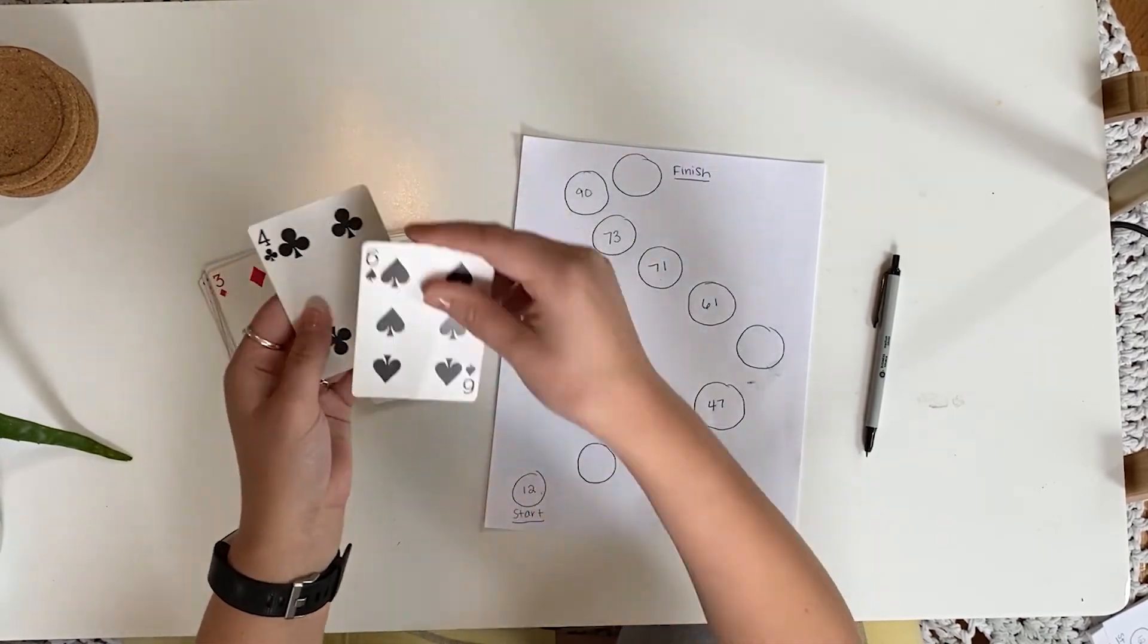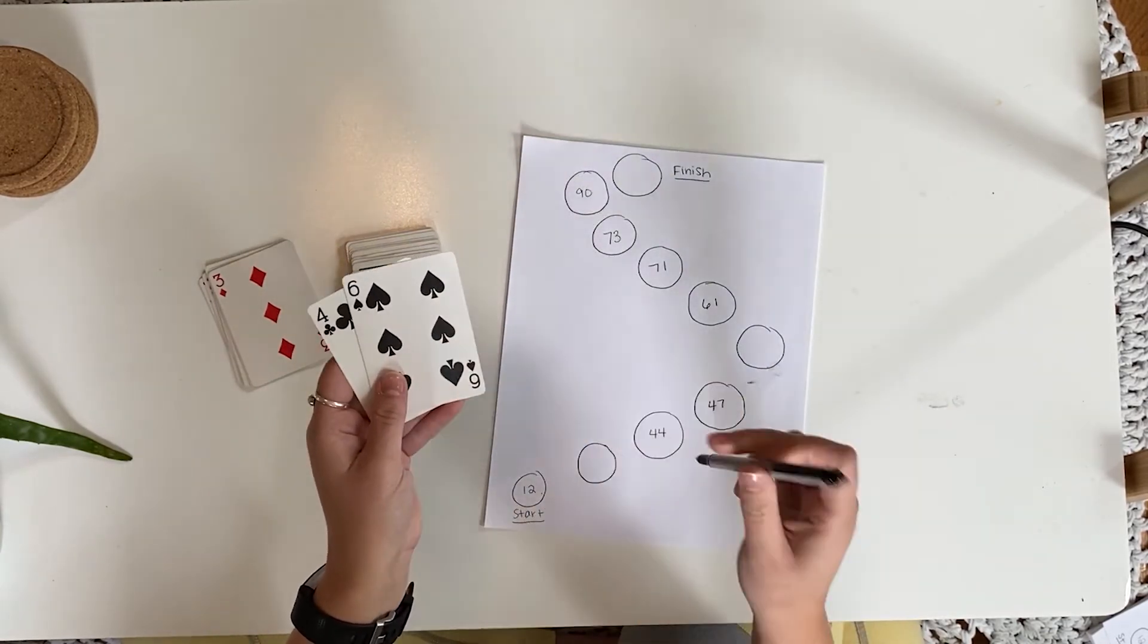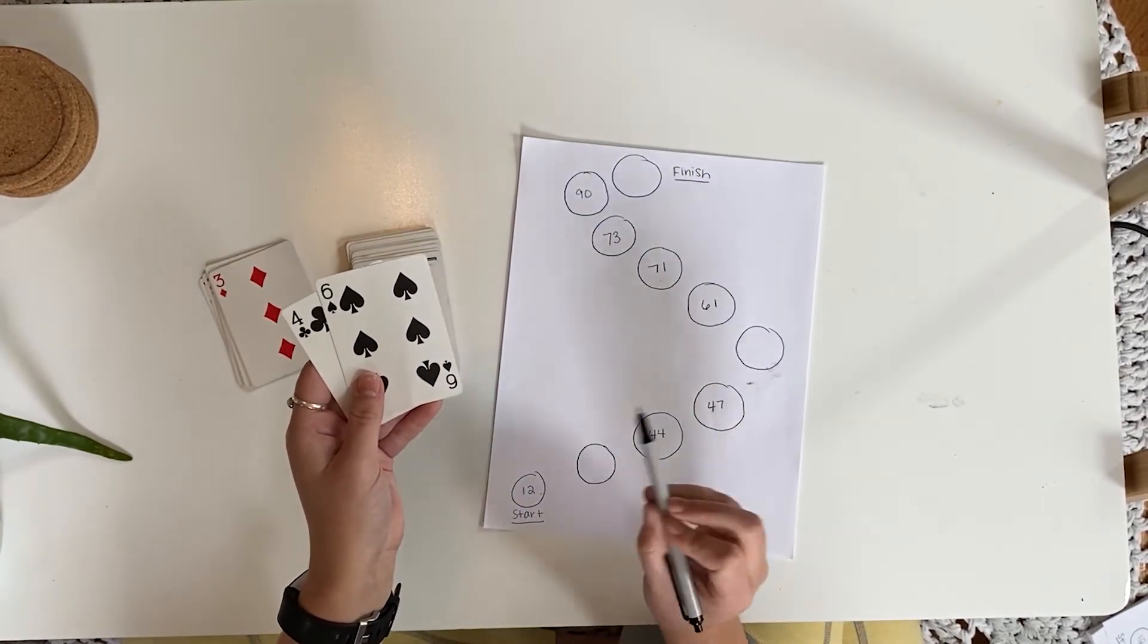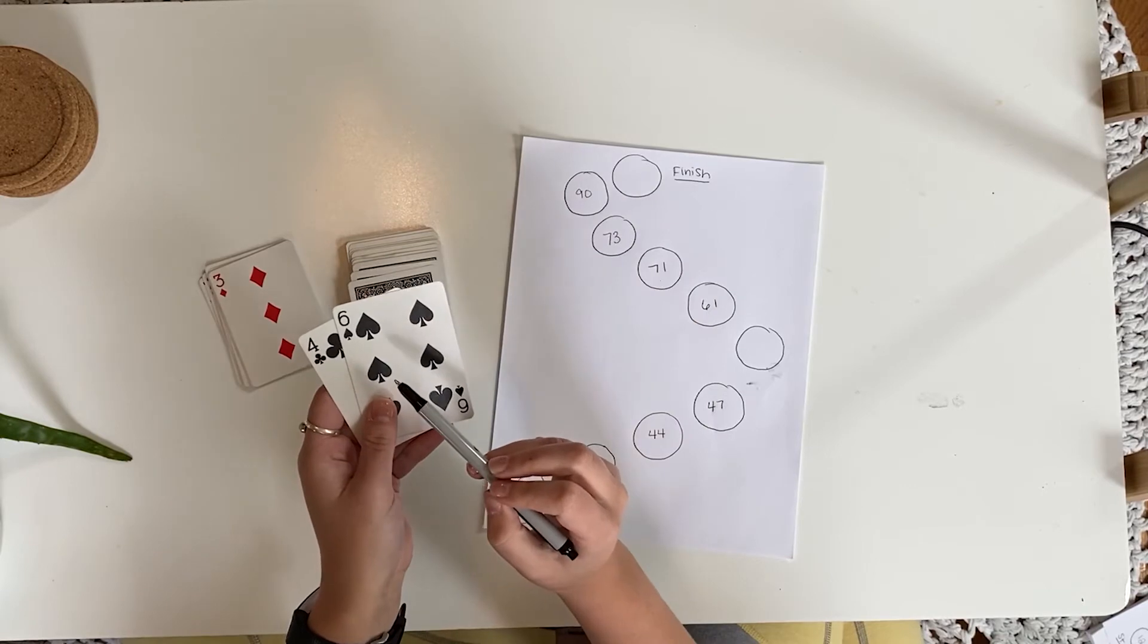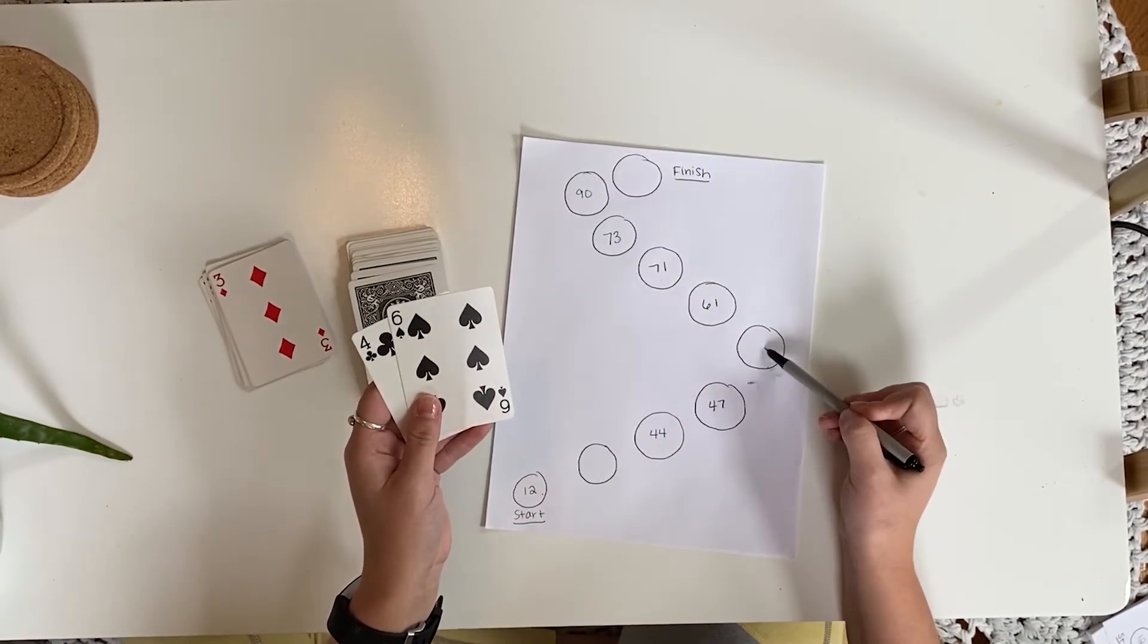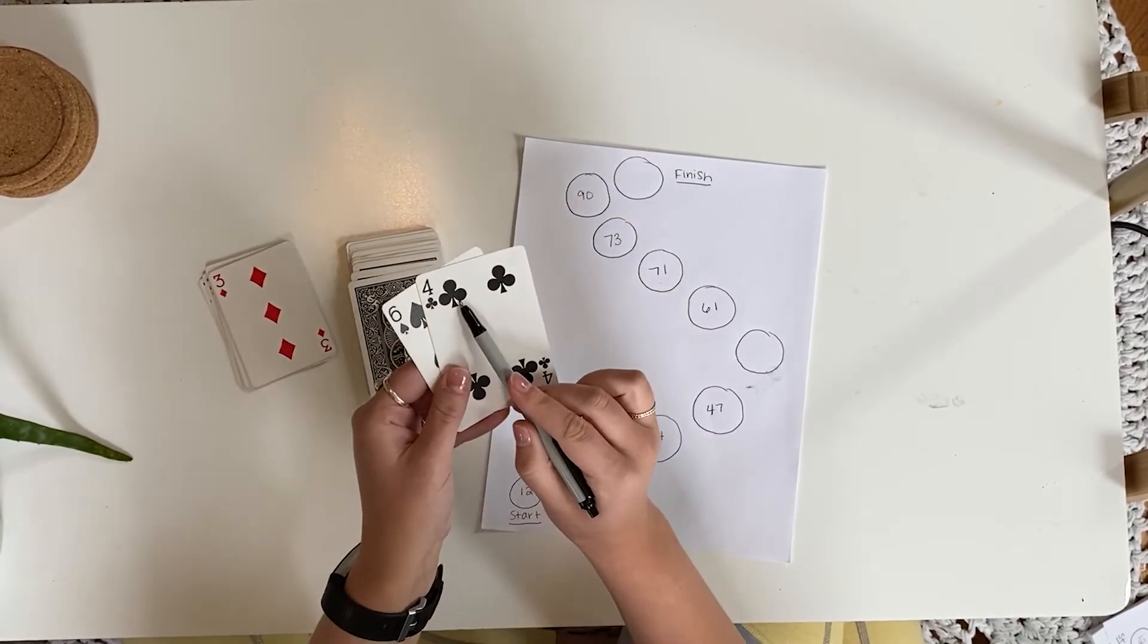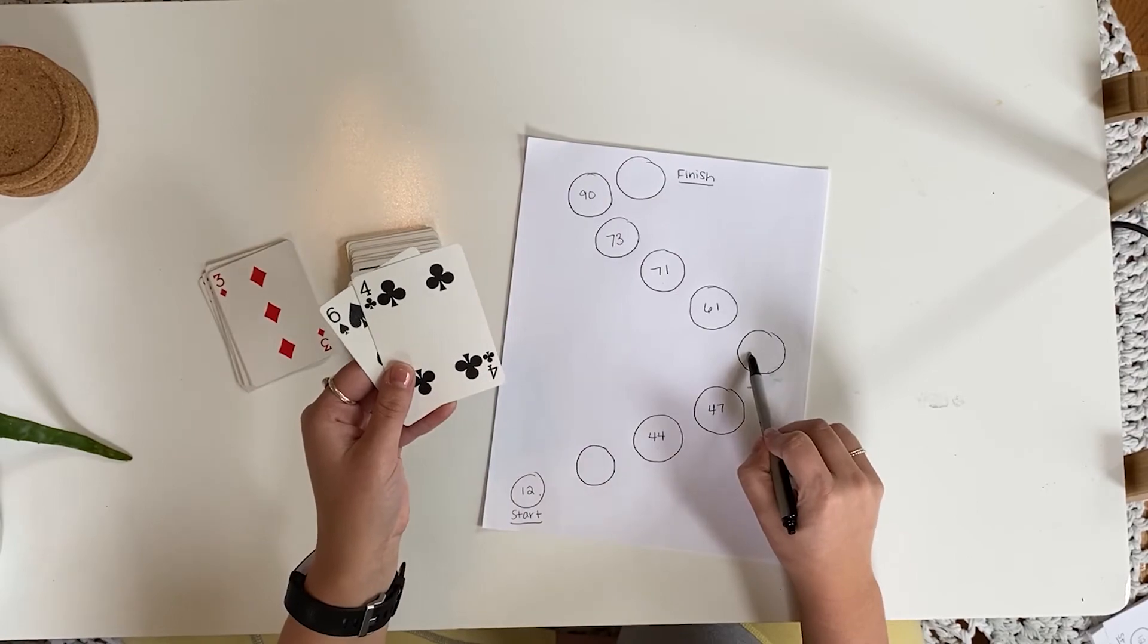If they draw a 4 and a 6, they could not place a 46 because it is not smaller than 44 or bigger than 47. Nor could they place a 64 because it is not smaller than 61 or 44 and not larger than 90.